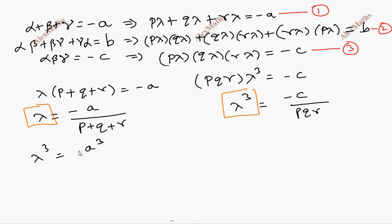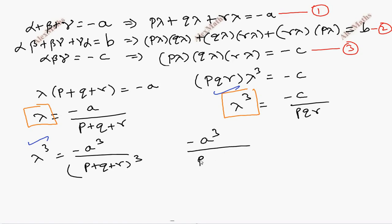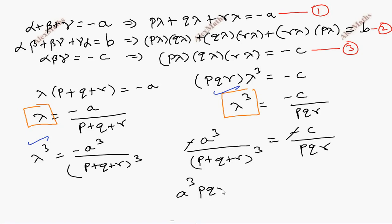Taking lambda from the equations, we get lambda = −a / (p + q + r). Substituting into the product equation gives lambda³ = −(a/cube)/(p + q + r)³ = −d/pqr. Therefore the condition is: a·(pqr) = d·(p + q + r)³, or equivalently −a³/pqr = d·(p + q + r)³. This is the required condition.